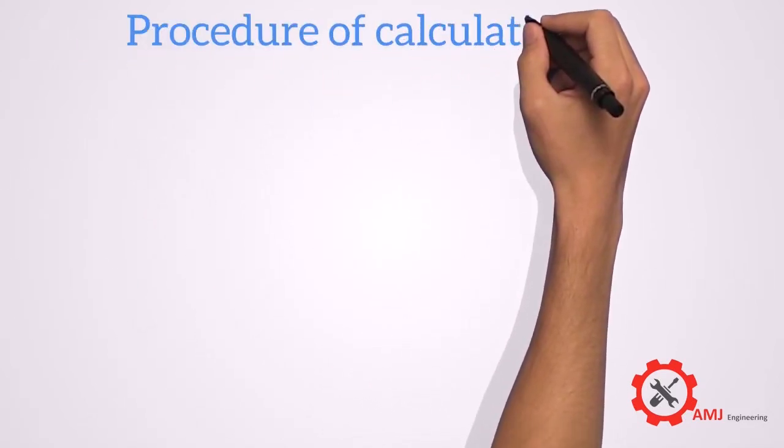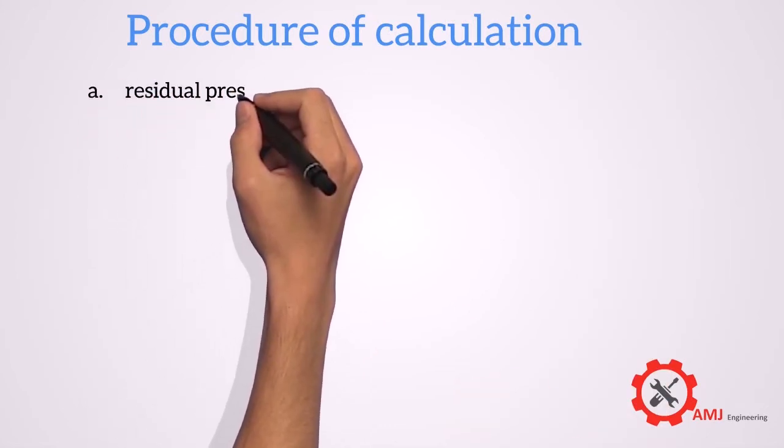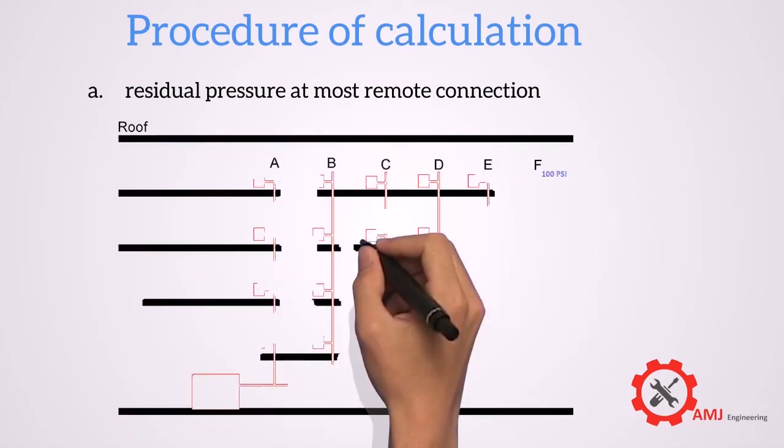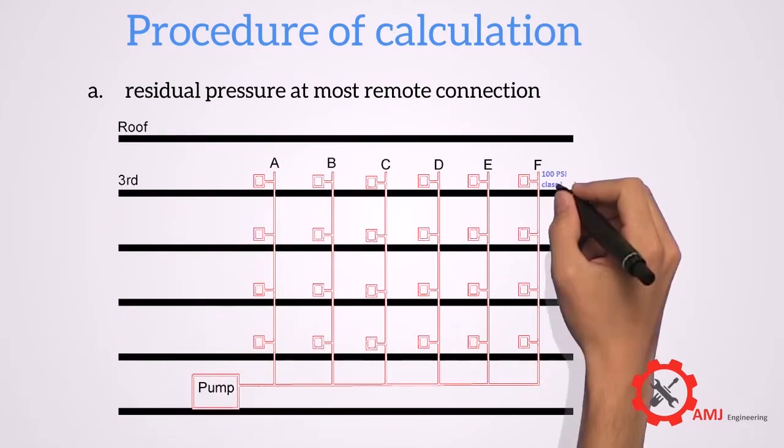Procedure of calculation is as follows. The residual pressure at the outlet of the hydraulically most remote hose connection should be 100 psi for class 1 and 3, and 65 psi for class 2.